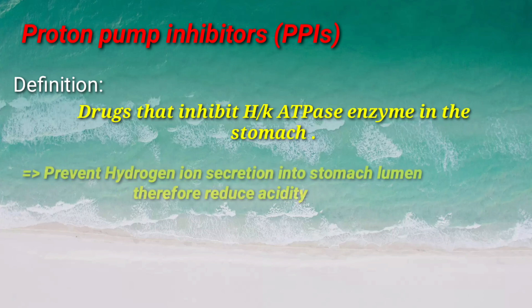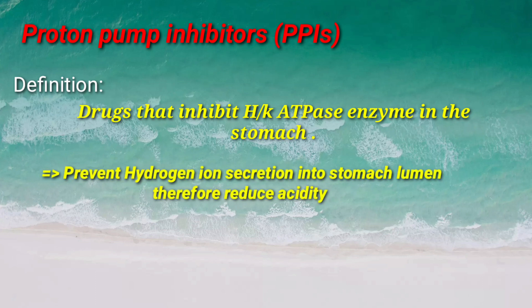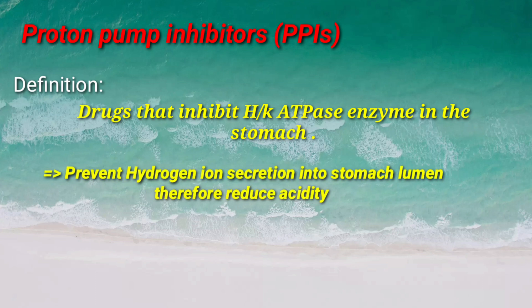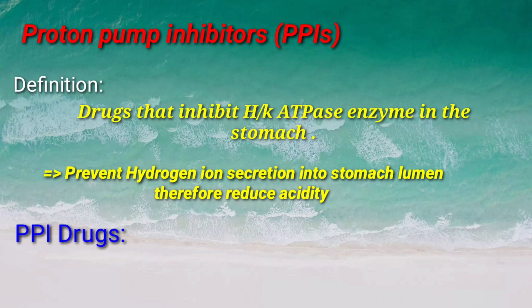Proton pump inhibitors are very important drugs and are prescribed almost with every type of medicine. These are drugs that inhibit the hydrogen-potassium ATPase enzyme in the parietal cell of the stomach, preventing hydrogen ion secretion into the stomach lumen. Therefore, hydrogen ions are not available for chloride to bind, so HCl formation is reduced.